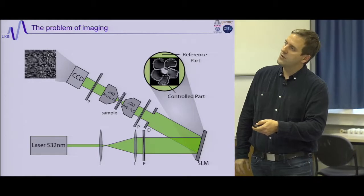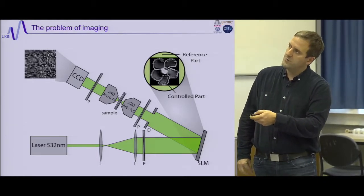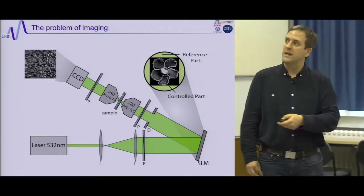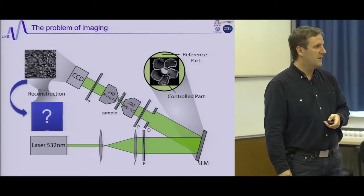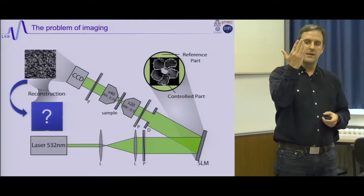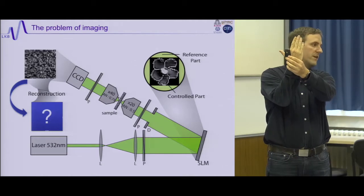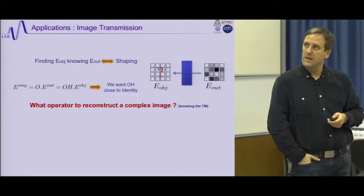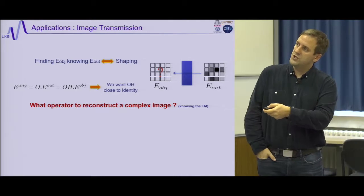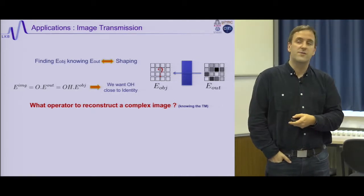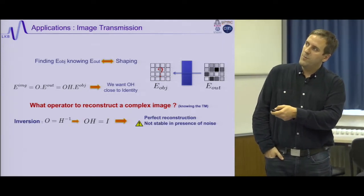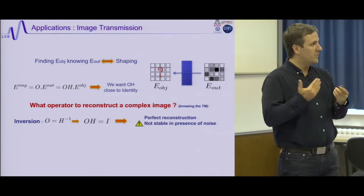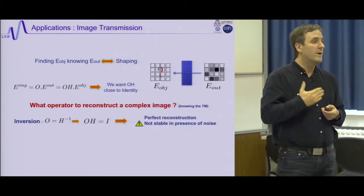Beyond focusing, we can do imaging. If I display an image on the SLM, shine a laser on it, and collect the speckle on the other side, I can try to guess what image was displayed from the output speckle — I am imaging through a scattering medium. The simple approach is to invert the problem by applying H⁻¹ to the output field. However, H⁻¹ is noisy: small eigenvalues are inverted and any noise is amplified. H† (phase conjugation) is better: small eigenvalues stay small, noise stays small.